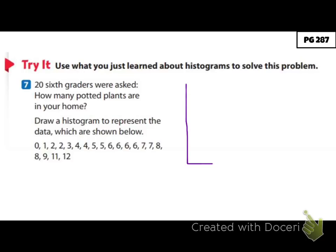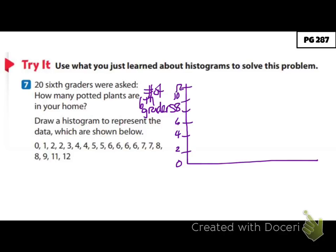Let's look at this. First, we draw our basic graph. On the left-hand side, the vertical axis, we have the number of sixth graders, and I'm going to count by twos: 2, 4, 6, 8, 10, 12. Across the bottom we do our intervals. Since I have from zero to twelve, I'll make mine: 0 to 2, 3 to 5, 6 to 8, 9 to 11, and 12 to 14. That keeps them even across, and you could have done them differently as long as each interval spans the same amount.